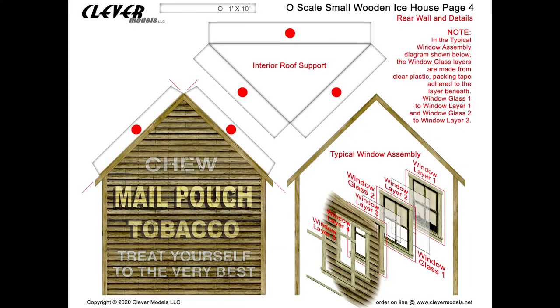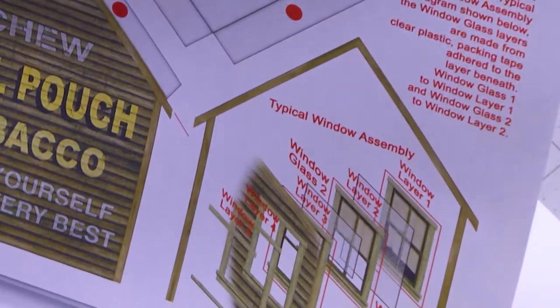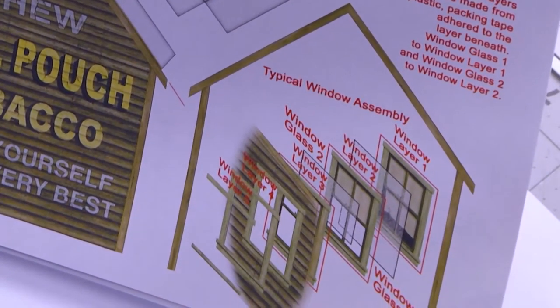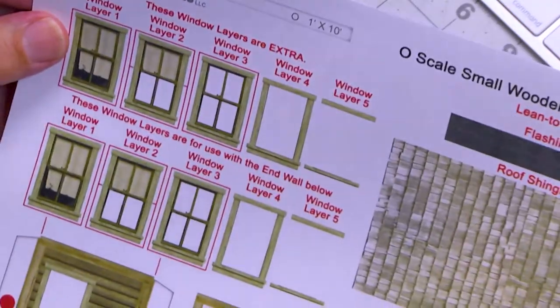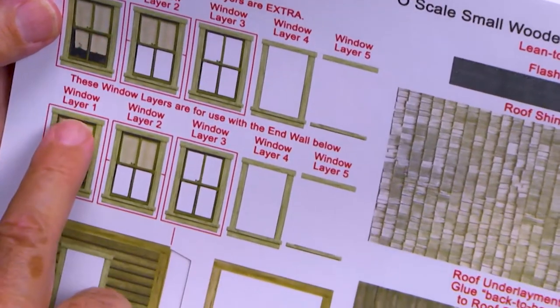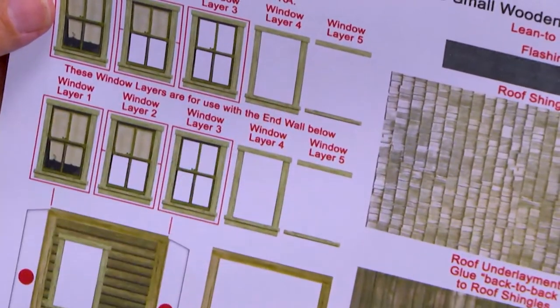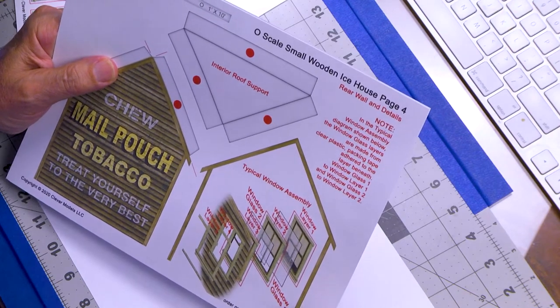Windows — can't live with them, can't live without them. First thing we're going to do today is tackle the windows on the small wooden ice house project. I'm going to be dealing with page 4, which gives a good example of how these five layers of windows are created, and page 9, where the windows are laid out by layer. I'll explain what you need to cut and what you don't cut.